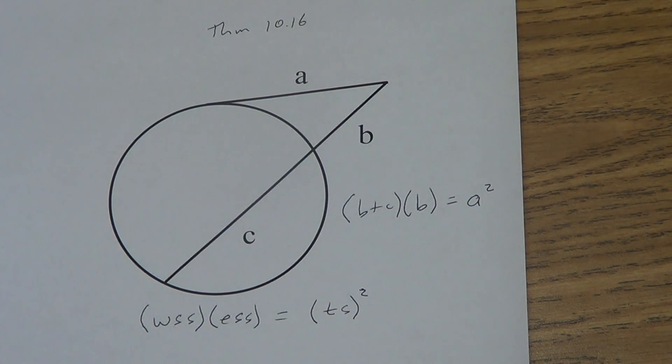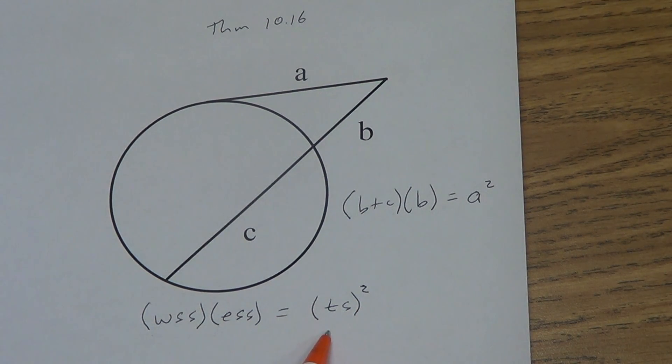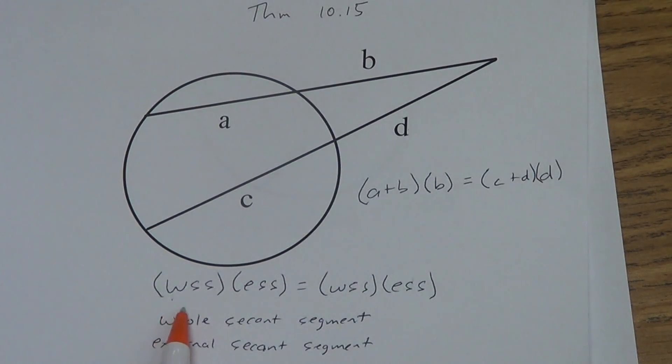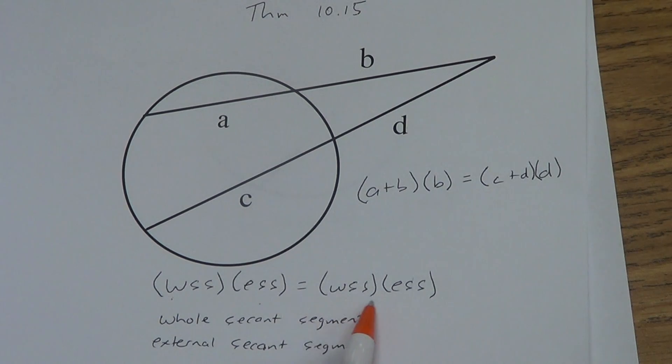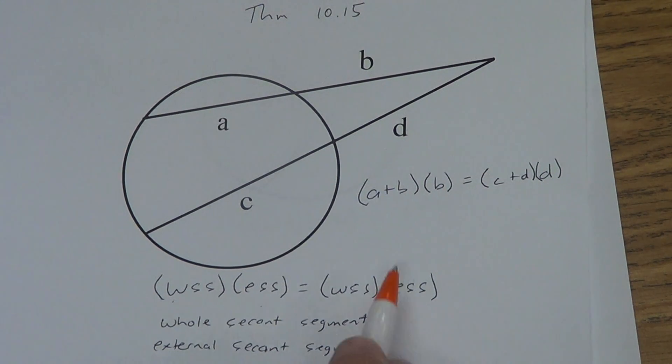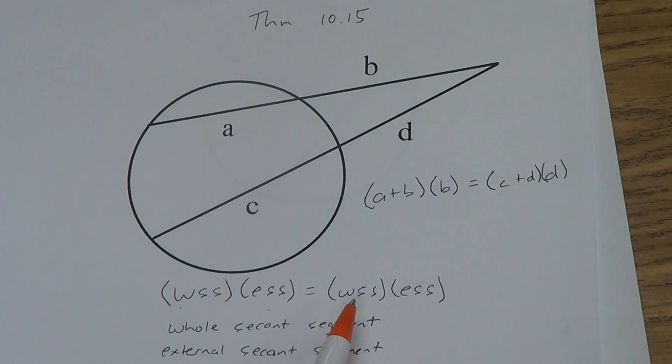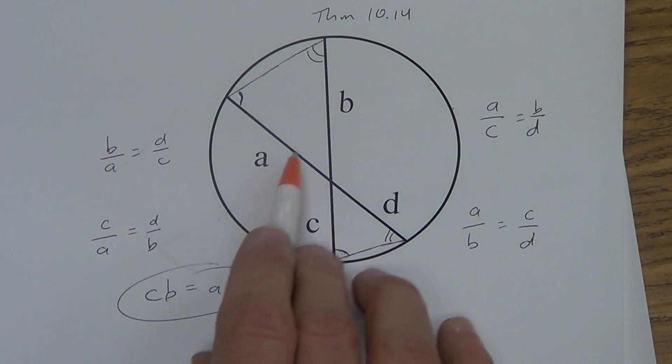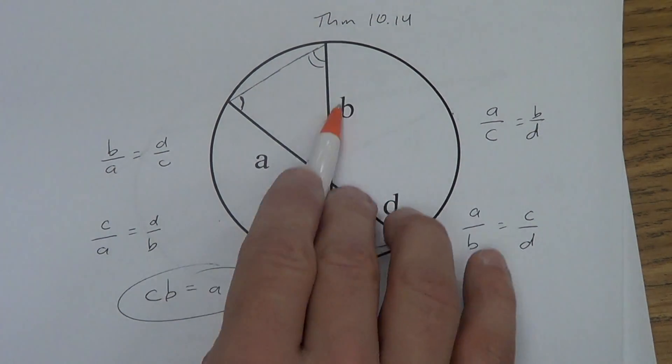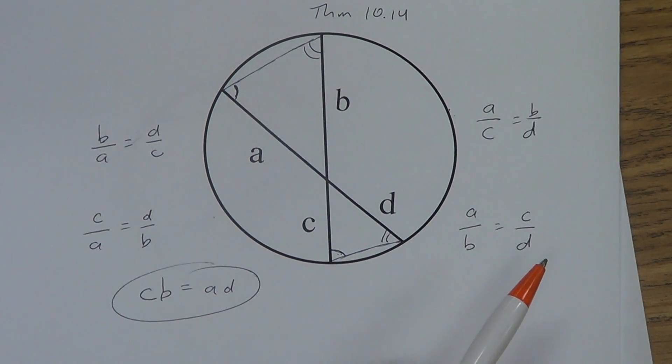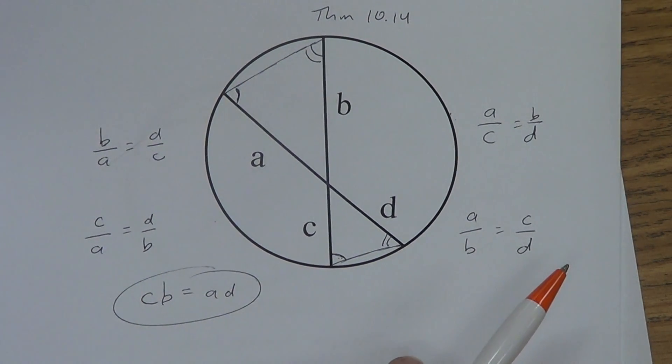So that is our theorems in this lesson. We'll come back with a second video and we'll do examples. So make sure you understand these things: wss times ess equals ts squared; wss times ess equals wss times ess. Do not set up proportions on this one. If you do a over c equals b over d, you're automatically going to get this one wrong. But this is the one where you're going to set up proportions. Don't move in opposite directions. Always make sure you're moving in a consistent direction and you set up your proportion. That's it for lesson 10.6 as far as theorems go.